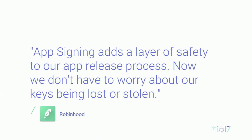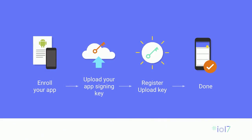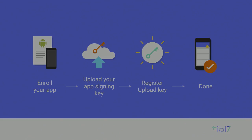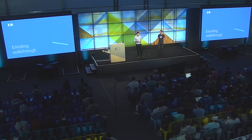So how does this solve your problem? We've had several partners using Google Play app signing for a while now, and the feedback has been really positive. Here, Robinhood speaks to the layer of safety that we've added, while at the same time all but eliminating the worry of having lost or stolen keys. And it's really easy to get started. You just upload your key, create a new one, and then you're done. In fact, it's so easy, I'm going to walk you through the entire process right now.